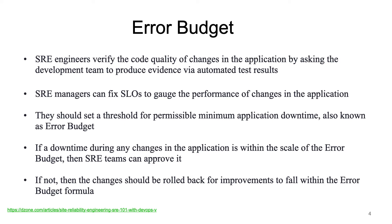So what is error budget? SRE engineers verify the code quality of changes by running automation — they have automated test results which indicate code quality. SRE managers can fix the SLOs to gauge performance. If the result falls within some threshold for a minimum permissible application downtime — known as the error budget — they will approve; if not, they will roll back the changes, as they want to ensure performance stays within the error budget.